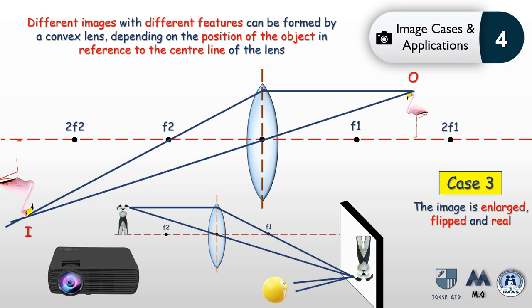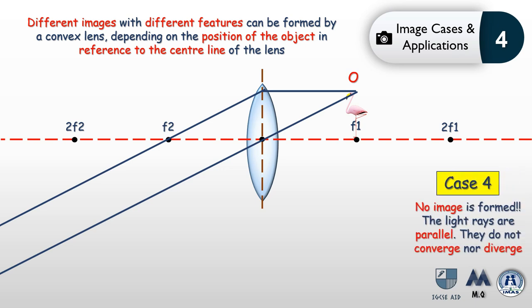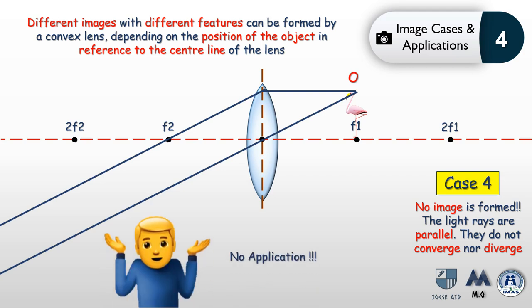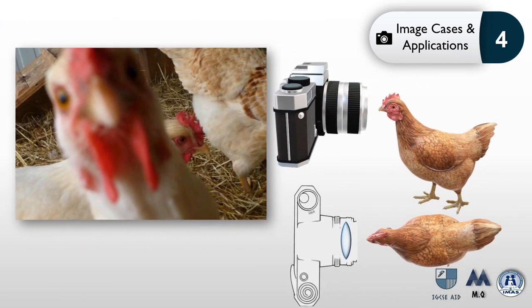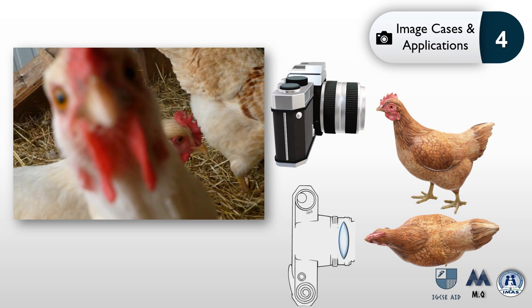In a projector, behind the lens there is an illuminated picture from a computer, and the lens enlarges this image onto the screen. If we push the object even closer until it reaches exactly the focal point f1, no image is formed. This is Case 4: the rays exiting the lens are parallel — they neither converge to form a real image nor diverge to allow a virtual image. This case has no application. As shown in a photo where the chicken was very close to the camera near the focal point, you only observe light without a clear image — it appears blurry.